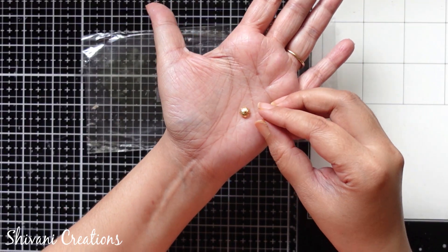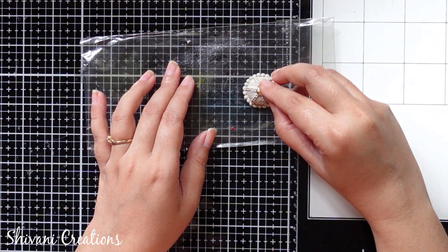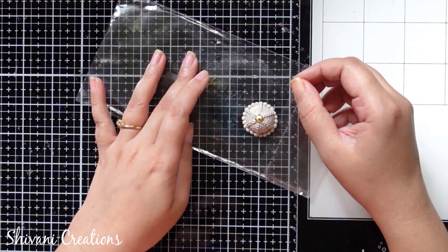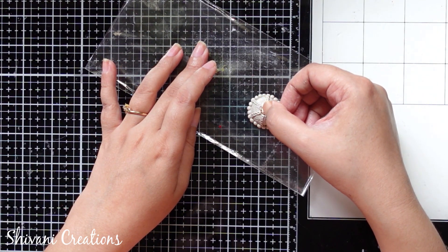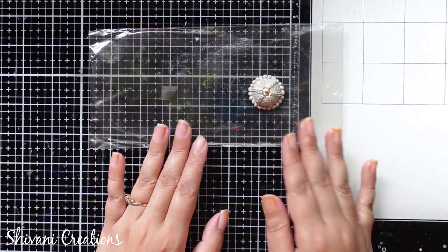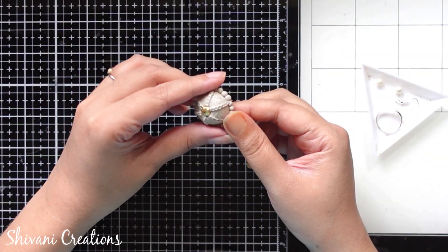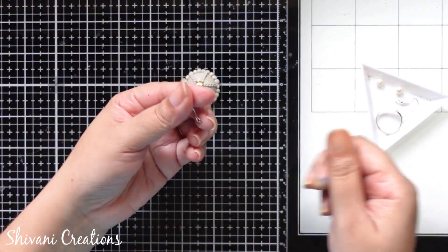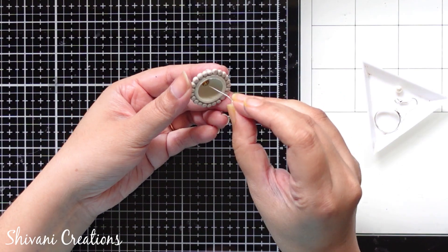Now here I am taking one round flower cap and sticking it exactly on top of the jumka or earring while the clay is wet. And now allow it to dry completely. So our jumka is nicely dried and hard, so I am just passing one eye pin through this. Before that I am passing one pearl and then passing through this flower cap hole.